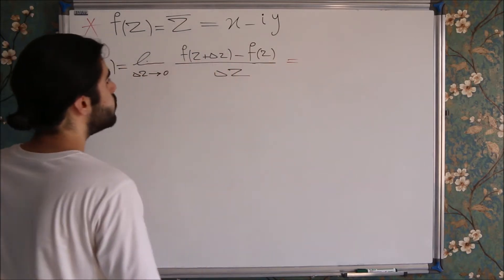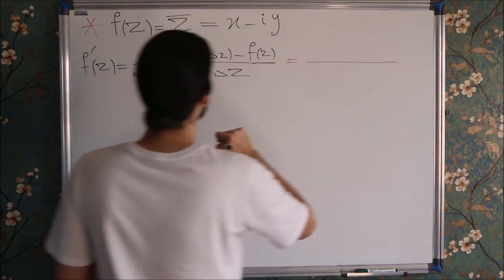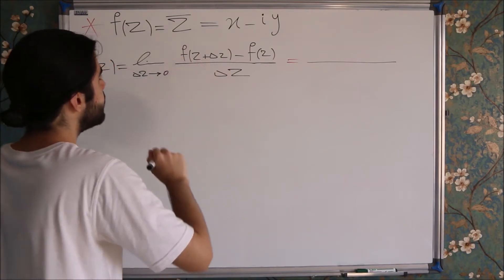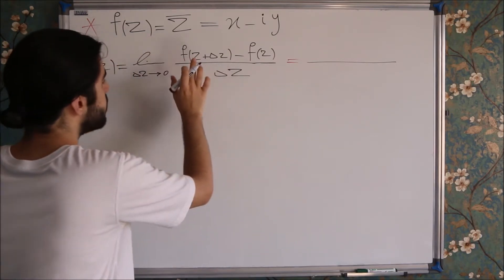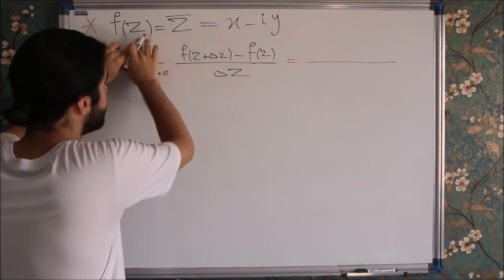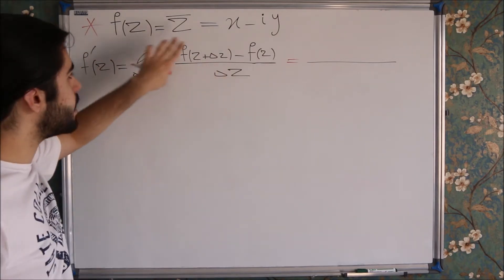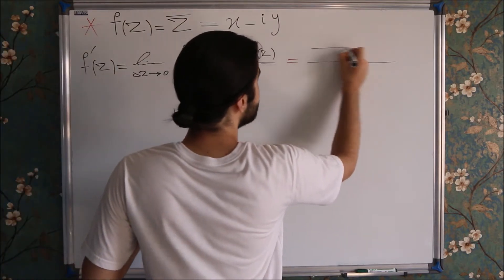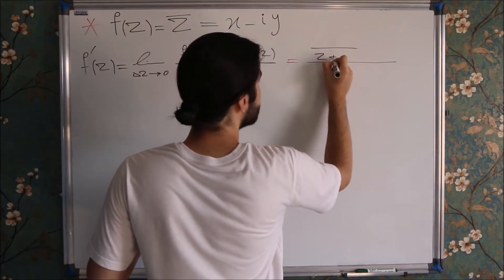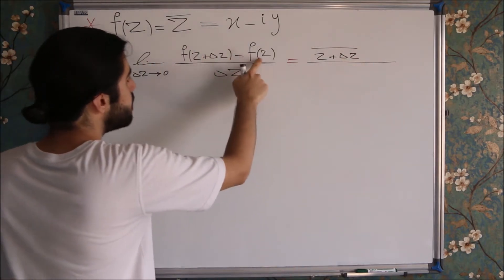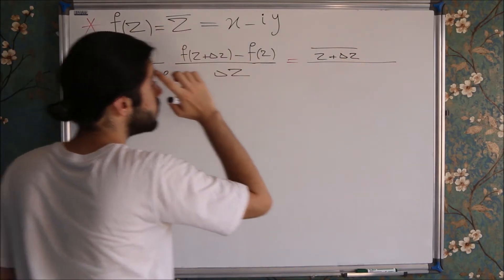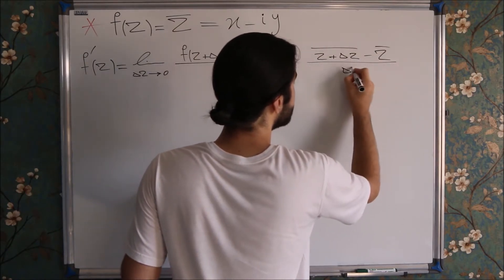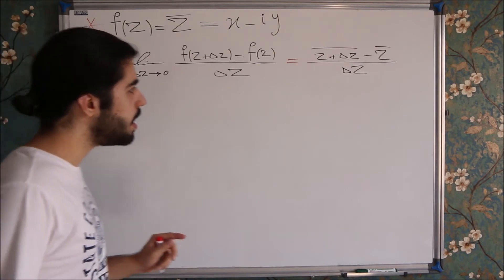So now I can do something with the numerator. I can write this f of Z plus Delta Z. If I plug this Z plus Delta Z instead of my Z in my main function, I will get the conjugate of Z plus Delta Z. So it will be the conjugate of Z plus Delta Z minus f of Z, which is equal to conjugate of Z, minus the conjugate of Z over Delta Z.